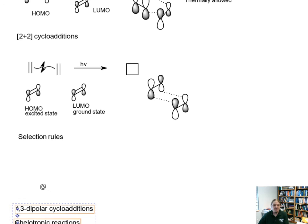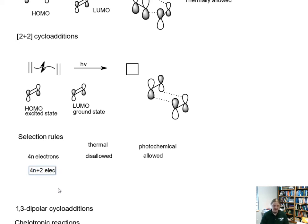If we're talking about a system, a combination of 4n electrons, so an even number of electron pairs, these things are not allowed under thermal conditions, but they are allowed under photochemical conditions. If we have 4n+2 electrons, so an odd number of electron pairs, and this is a total electrons across both partner molecules, these are allowed under thermal conditions and disallowed under photochemical conditions. This is a symmetry thing.